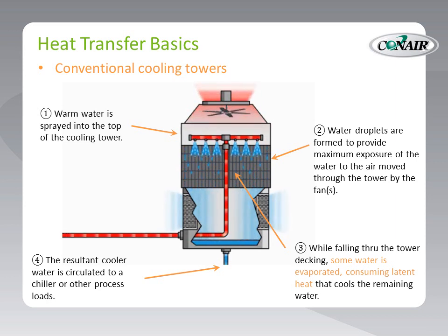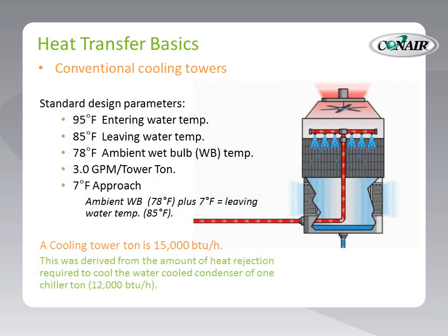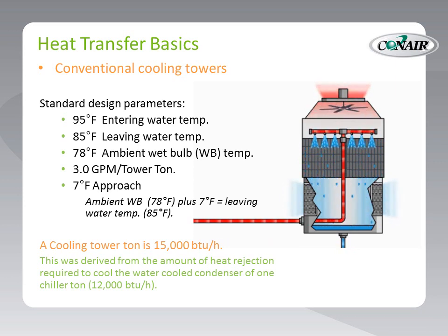The cooling tower capacity can be regulated by turning the fan or fans on and off, varying the volume of air flow through the tower as with a fan's variable frequency drive, or varying the volume of the water delivered to the tower as with a pump's variable frequency drive. The standard design conditions for an evaporative cooling tower are water enters at 95°F and leaves at 85°F with a 78° ambient wet bulb, while circulating 3 gallons per minute per cooling tower ton.